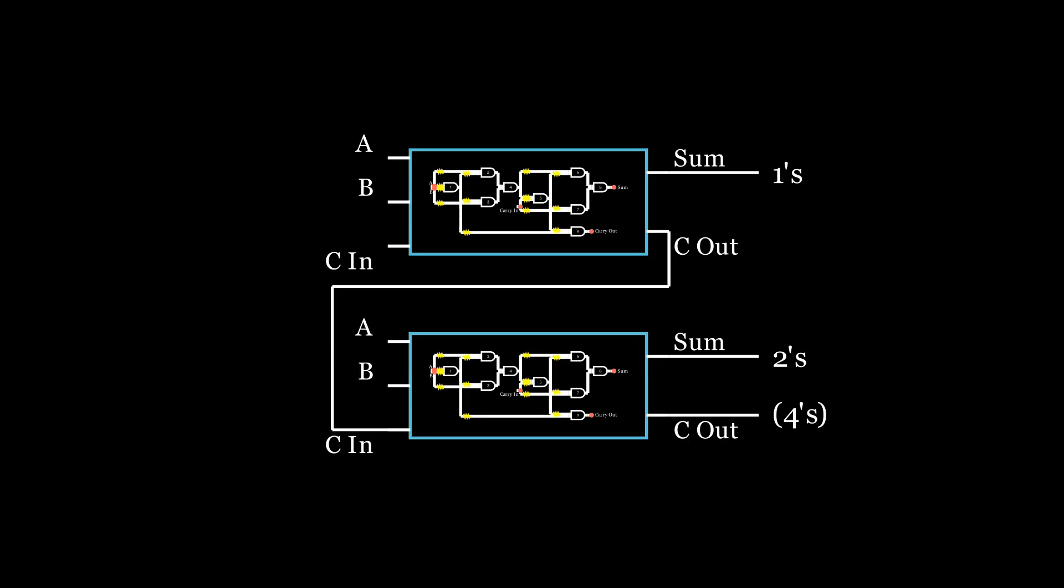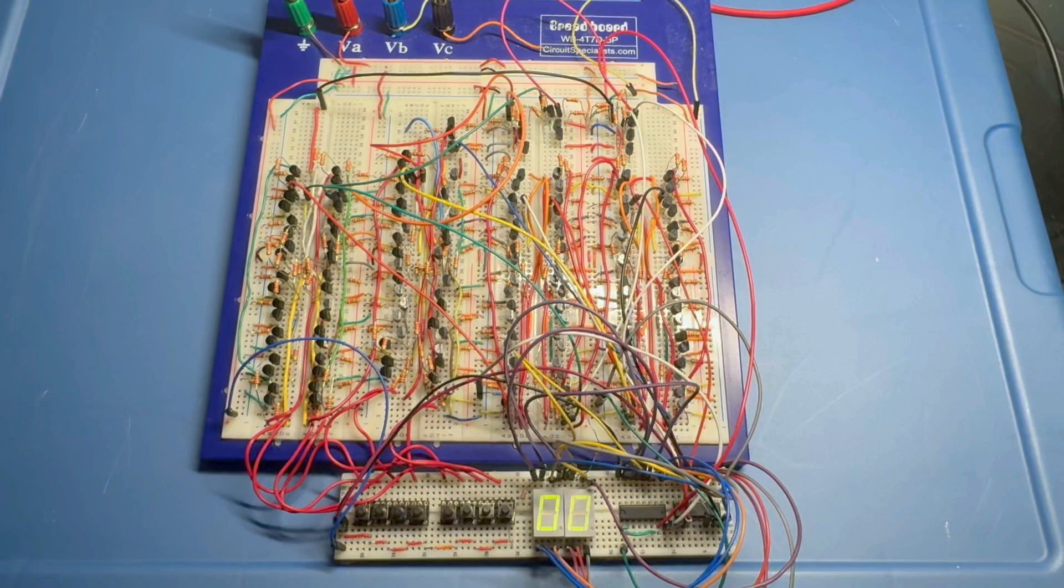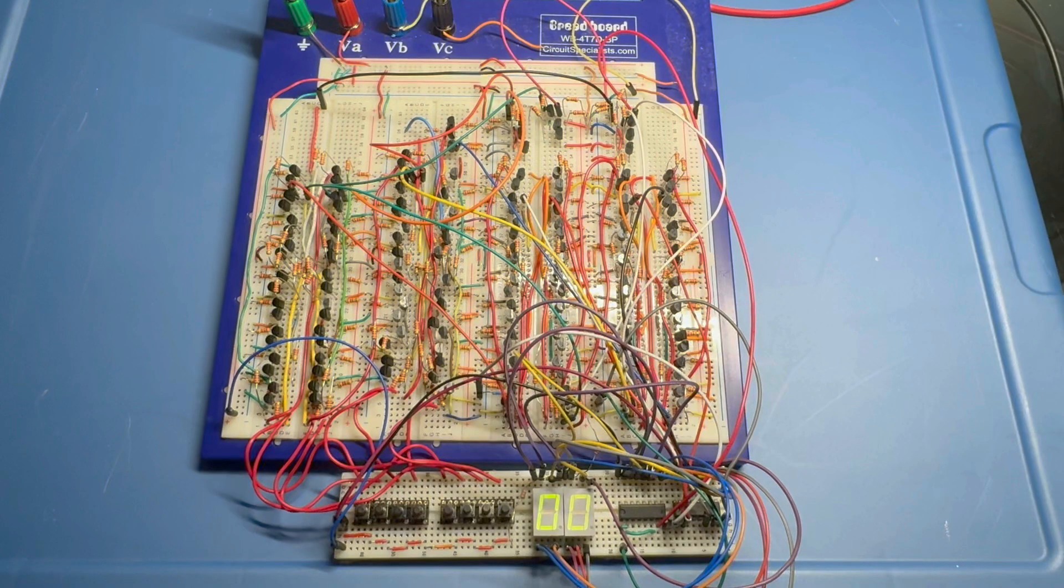So, we can create a calculator by linking multiple full adders together. At this point, you might be wondering what the A and B inputs look like for these. If we're in a system like this that has two full adders, then the top full adder will add the ones digits of A and B, and the second full adder will add the twos digits of A and B. So this gives us a two-bit calculator. When I built the circuit, I extended this and made four full adders to make a four-bit calculator.